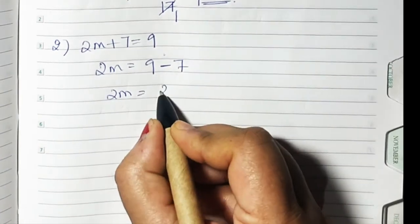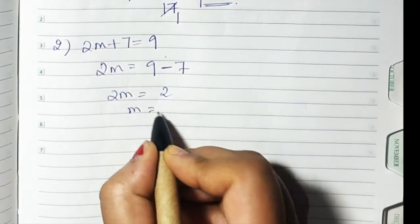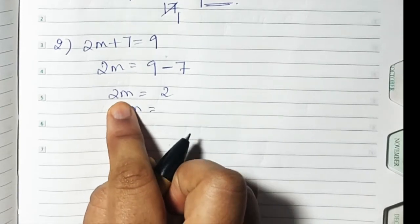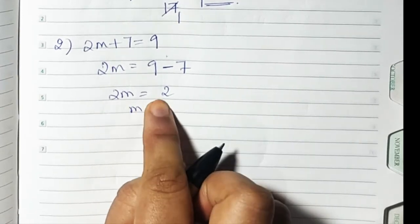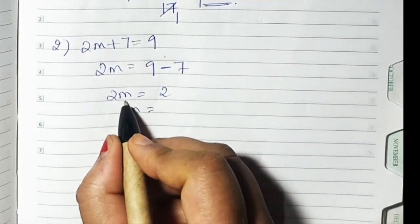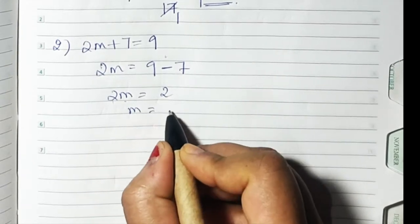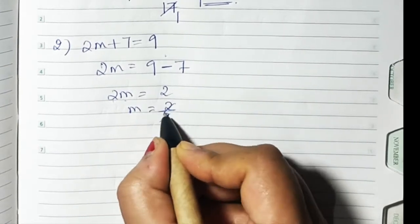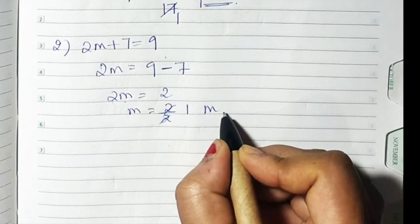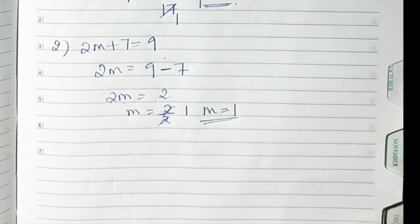So 2m is equal to 2. Now it's 2 multiplied by m, so this 2 comes to the other side and becomes divided. When you leave m alone, m equals 2 divided by 2, which is 1. So the value of m is 1.